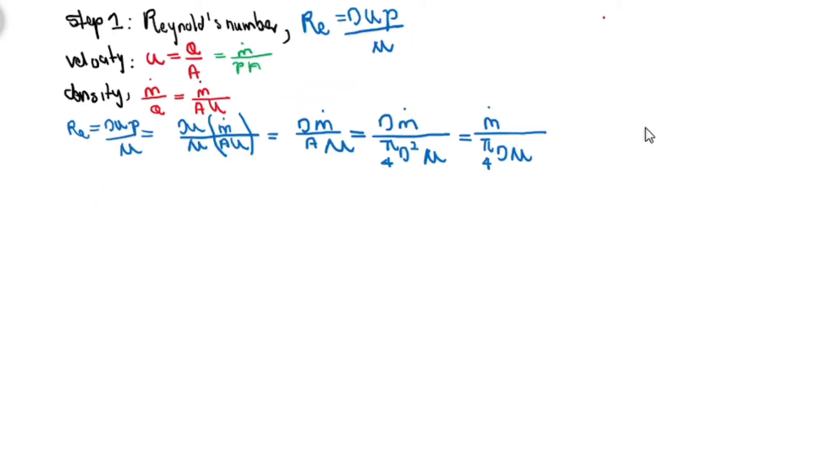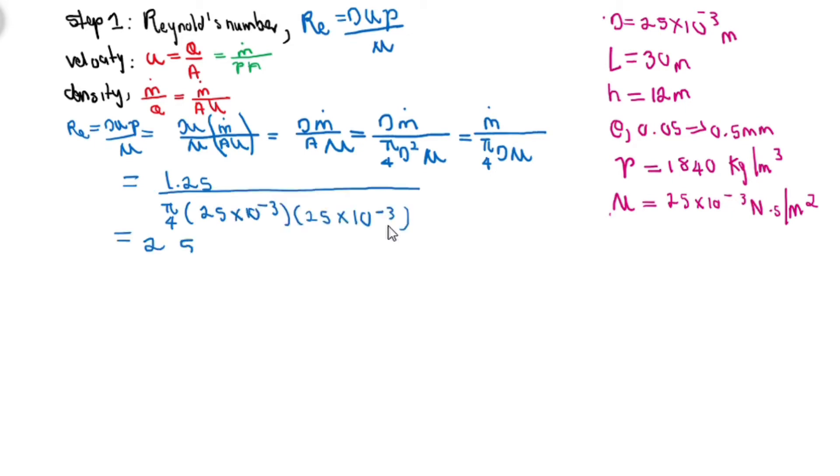Just to remind you, we are given diameter, we are given the length to be 30 meters long, and we are given the height of 12 meters. We are given E, the roughness, between 0.05 and 0.5 millimeters, density to be 1840, and we are also given the viscosity, the fluid's resistance to flow. Let's calculate our Reynolds number: 545, it does not have units. This fluid is transition, simply because it falls within the range. Different textbooks have different ranges.